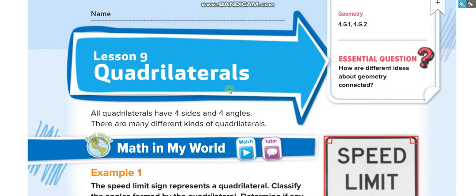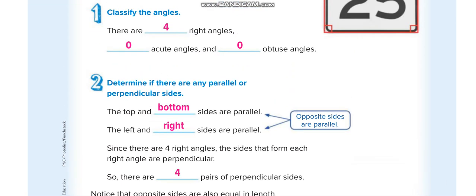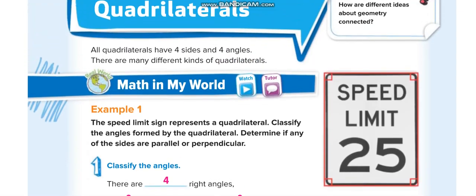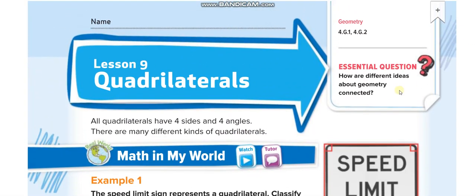Hello everyone, welcome back to another video lesson. Today's lesson is for grade 4, chapter 14, lesson 9: quadrilaterals, page number 925. Before starting today's lesson, don't forget to subscribe to my channel 'Learn Math with Mr. Saad' and press the bell icon to get notified for every new video. Let us start today's lesson.